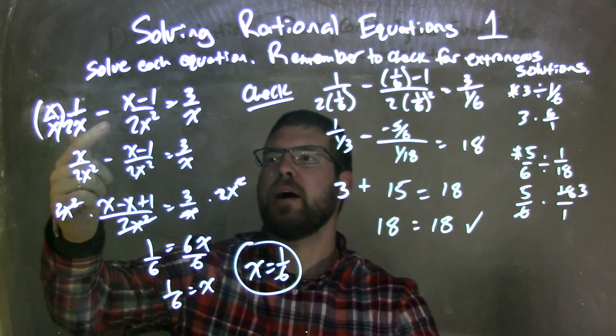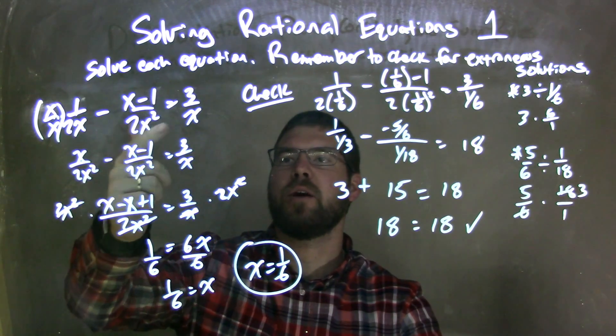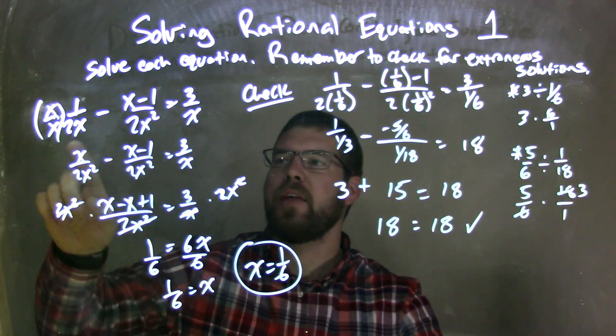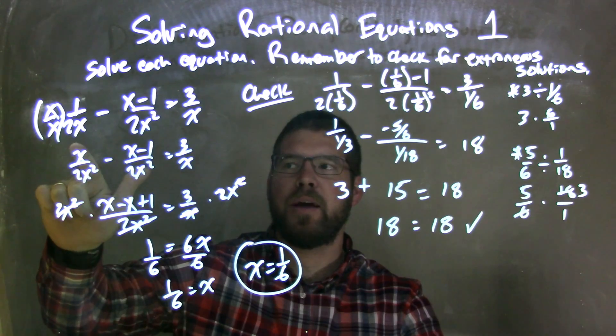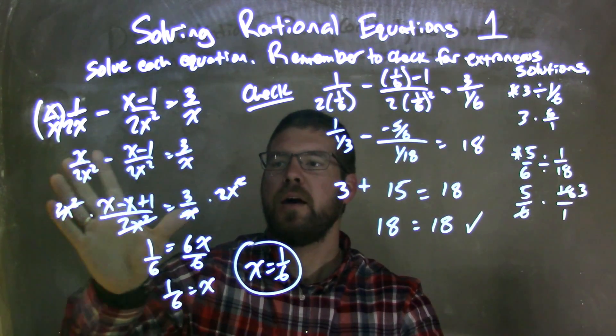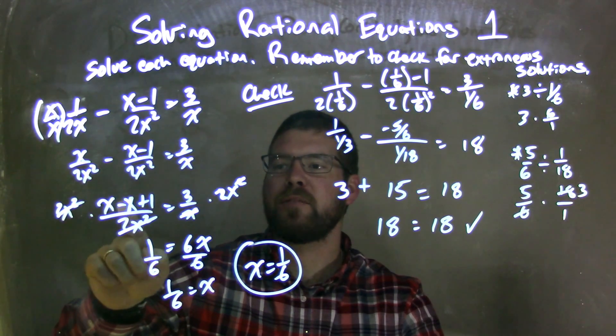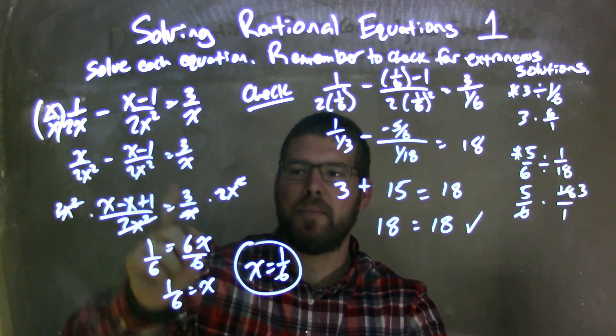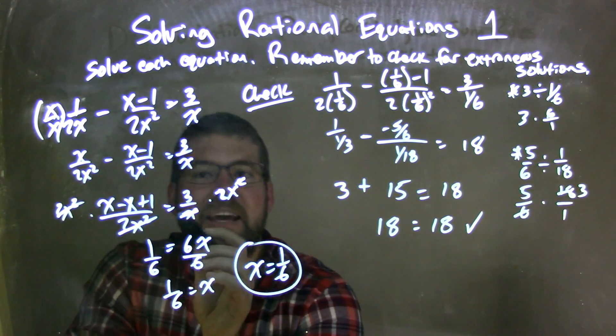So let's recap. We had 3 over x. I then had to combine these two together to have the same base, so I multiplied by x over x, giving me 2x squared in that base and x in the numerator. By combining them, I was left with x minus x plus 1, so I distributed that minus sign, all over 2x squared equals 3 over x.